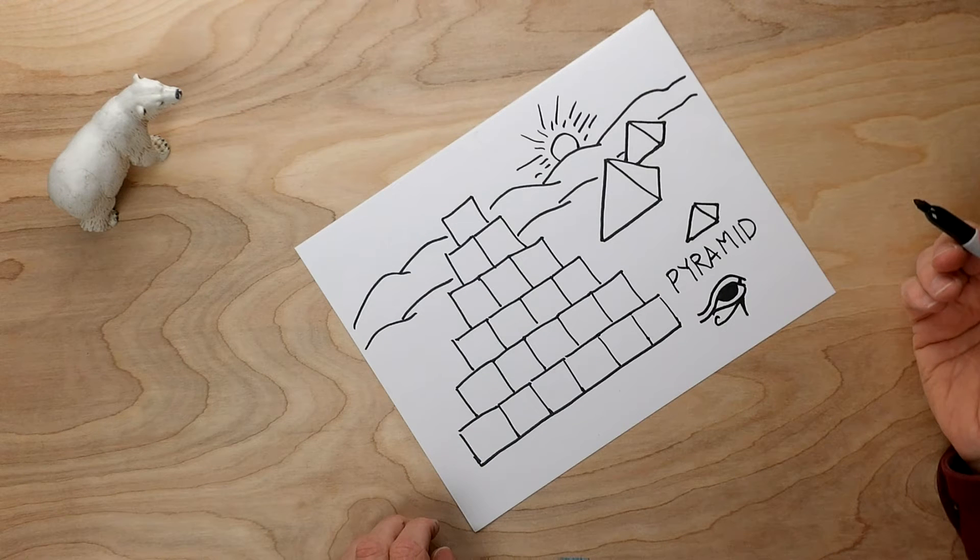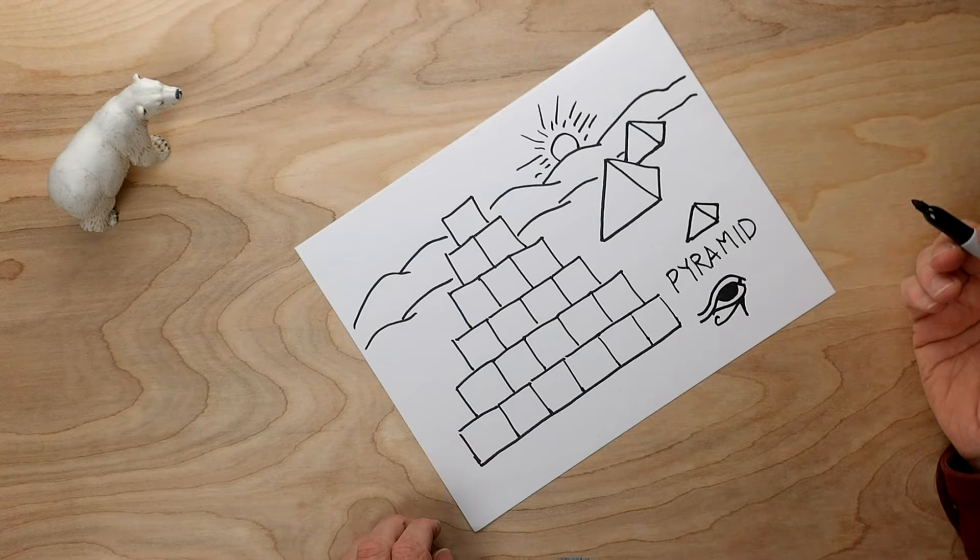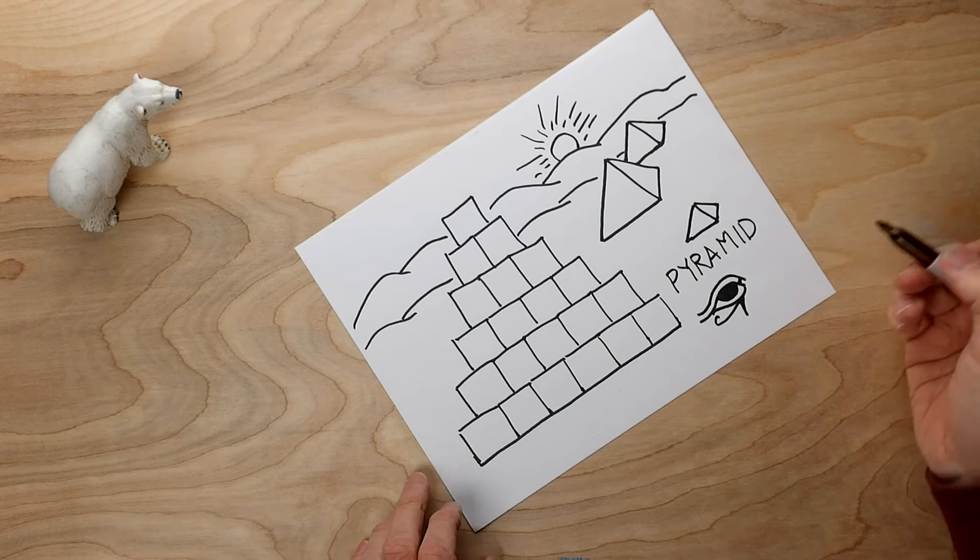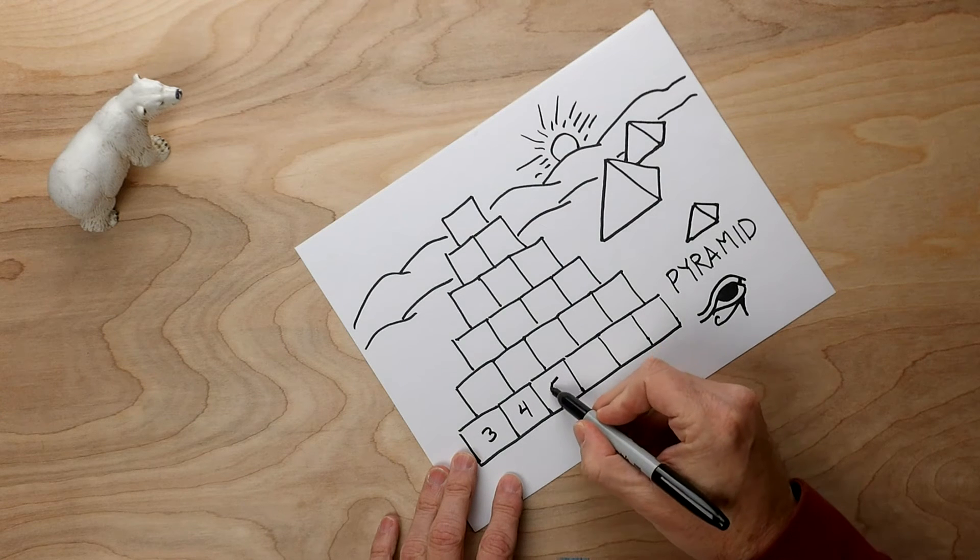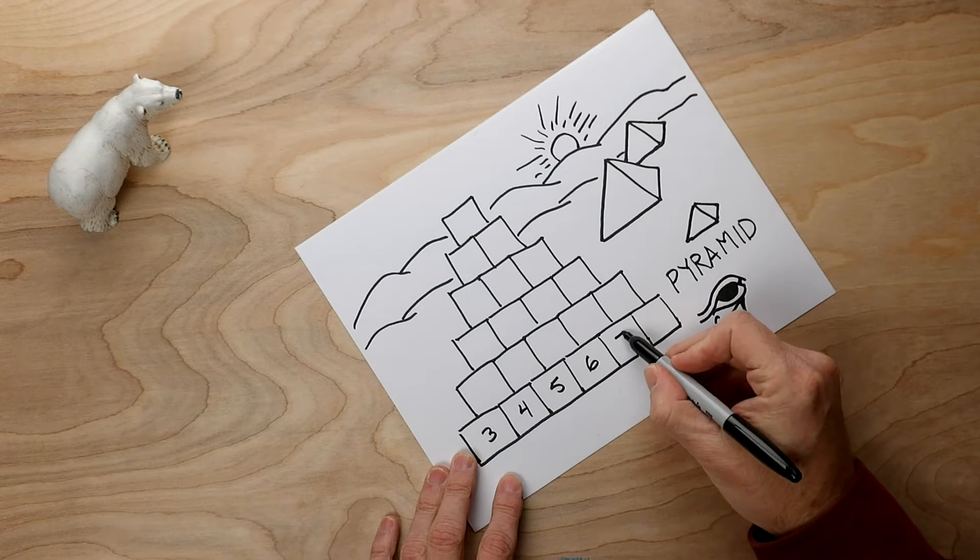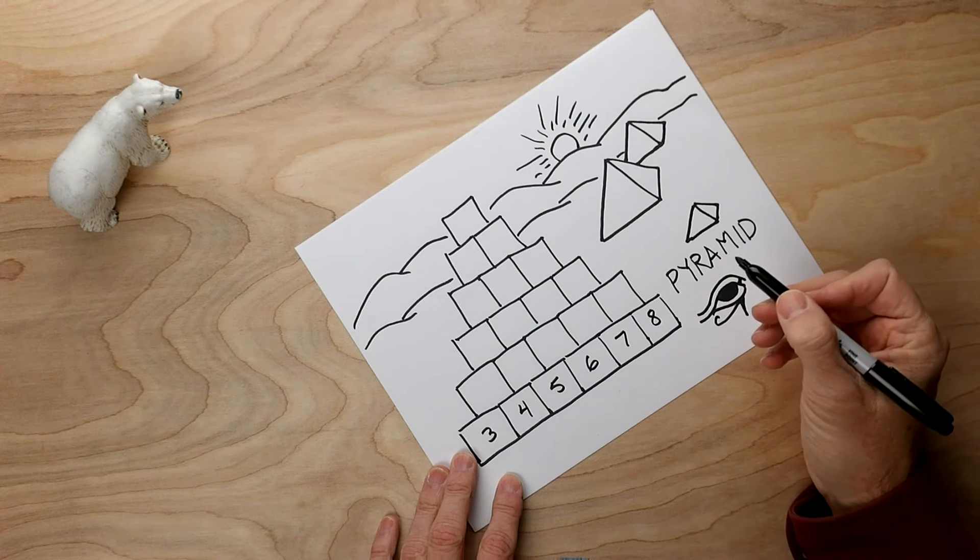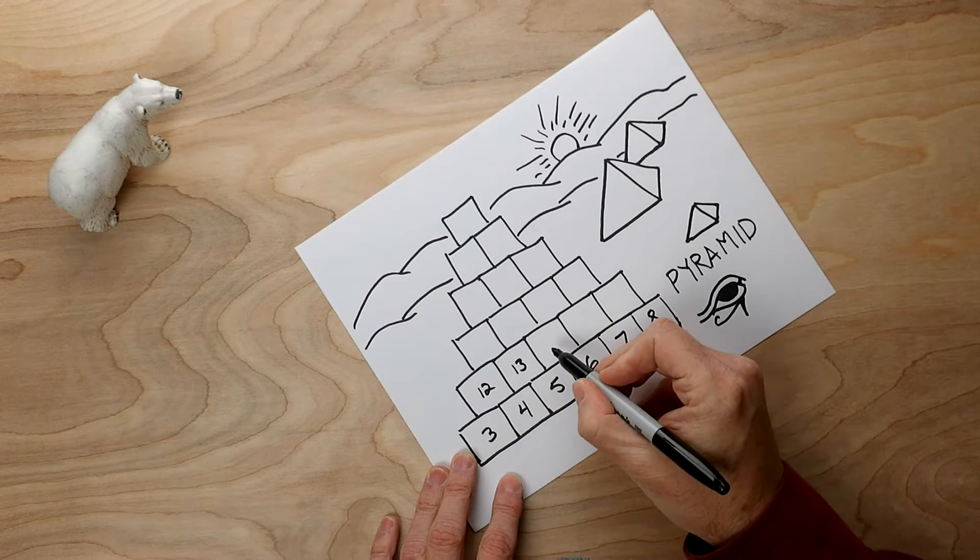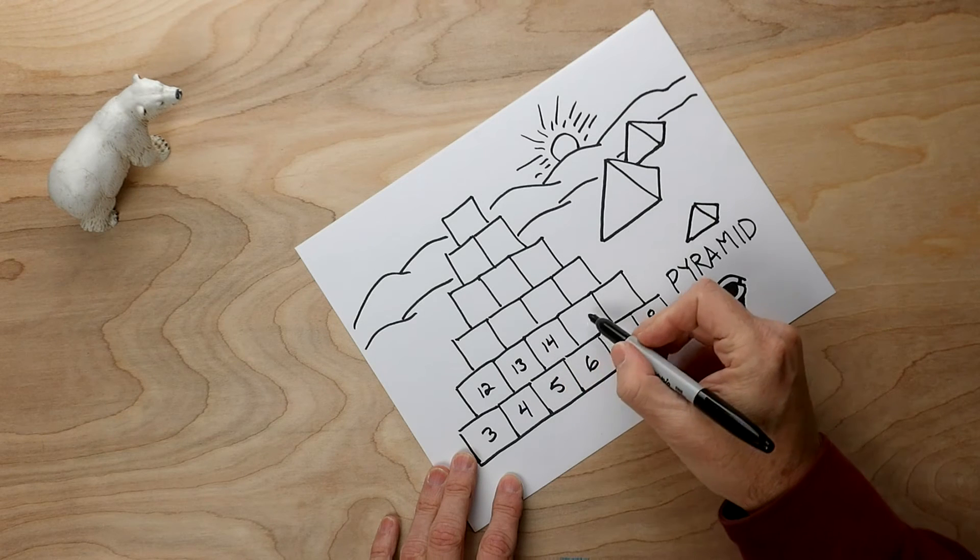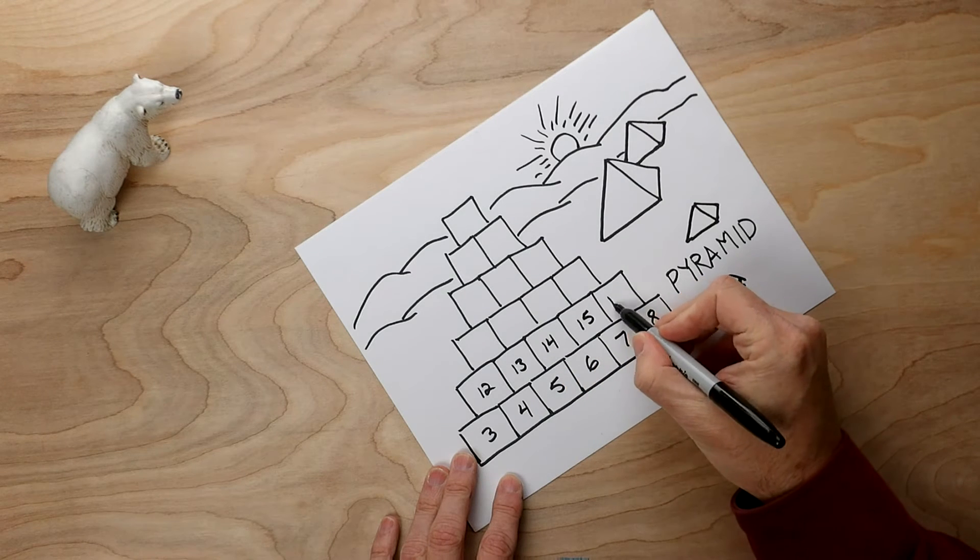Looks like a great game board, but there's one thing missing. What is it? Oh, the numbers. Let's put the numbers into our pyramid. Three, four, five, six, seven, and eight. On the next tier, 12, 13, 14, 15, and 18.